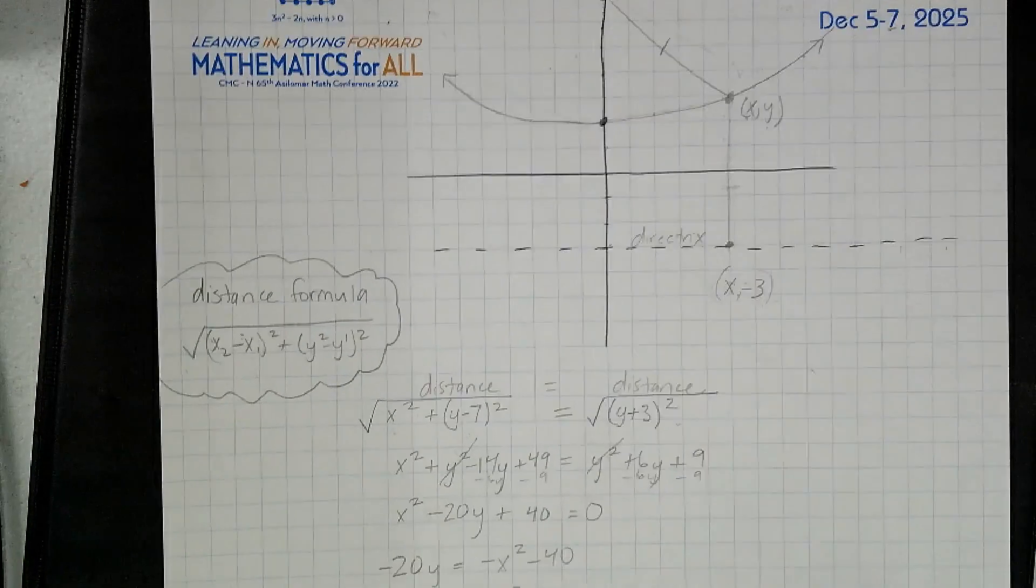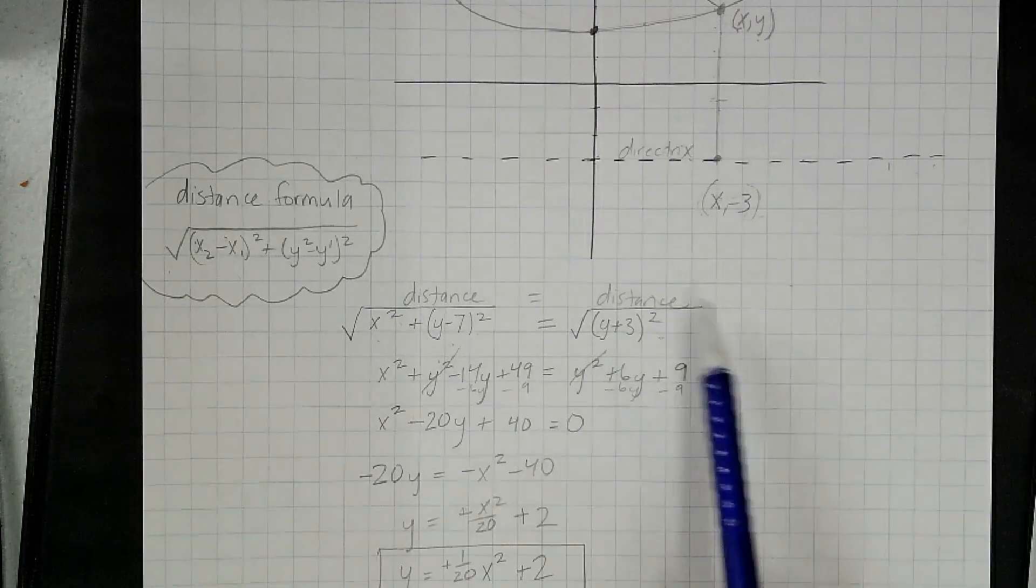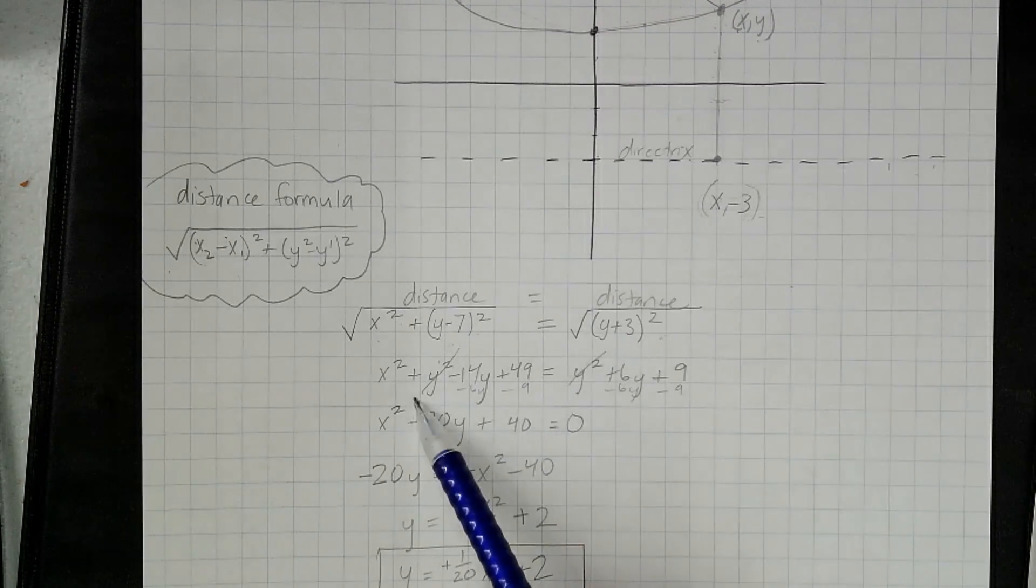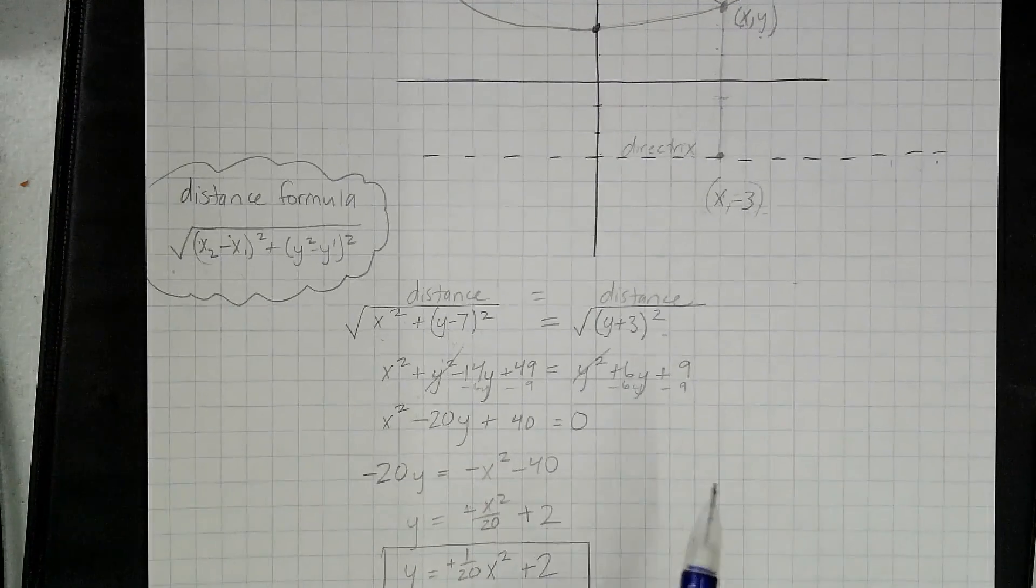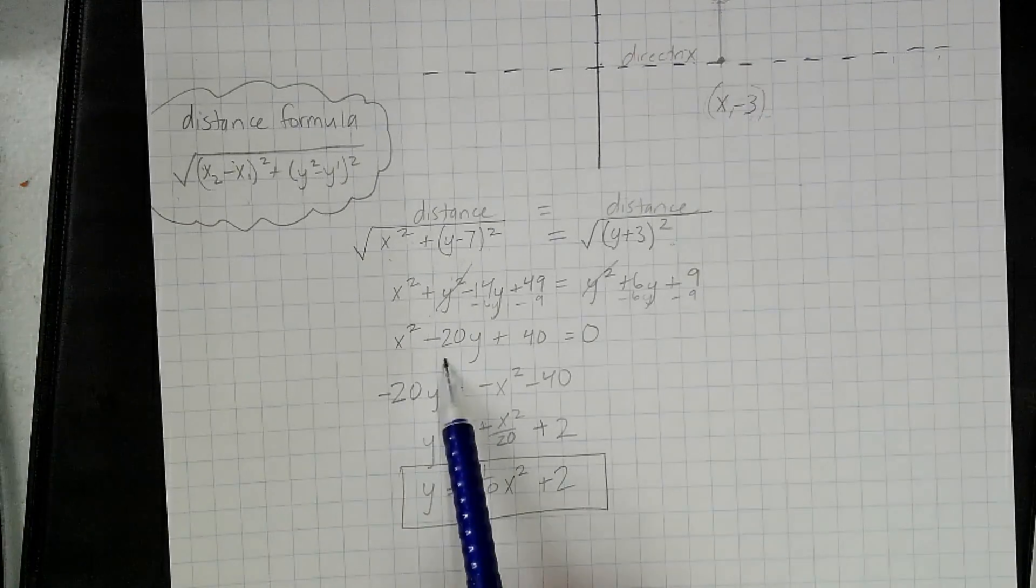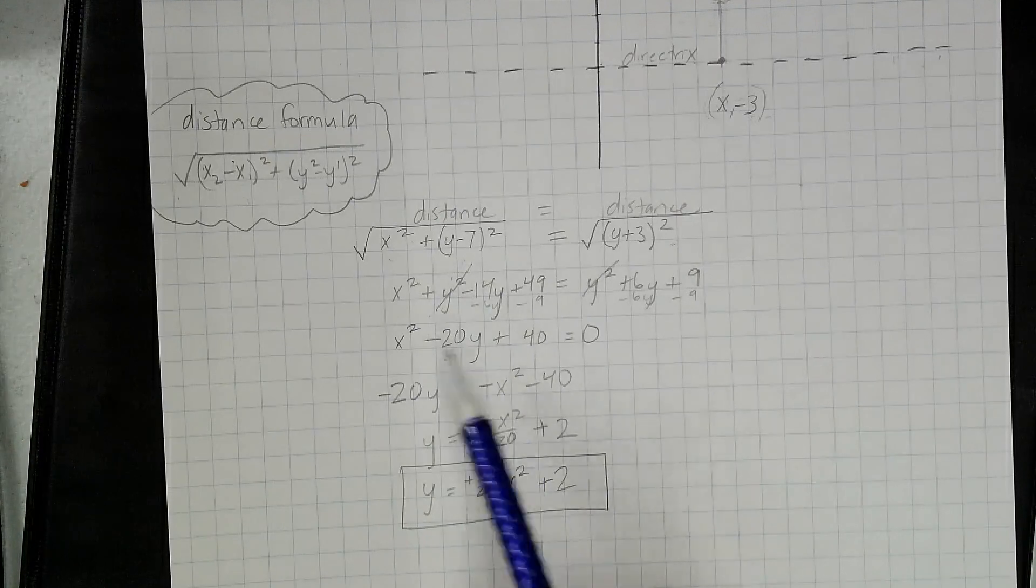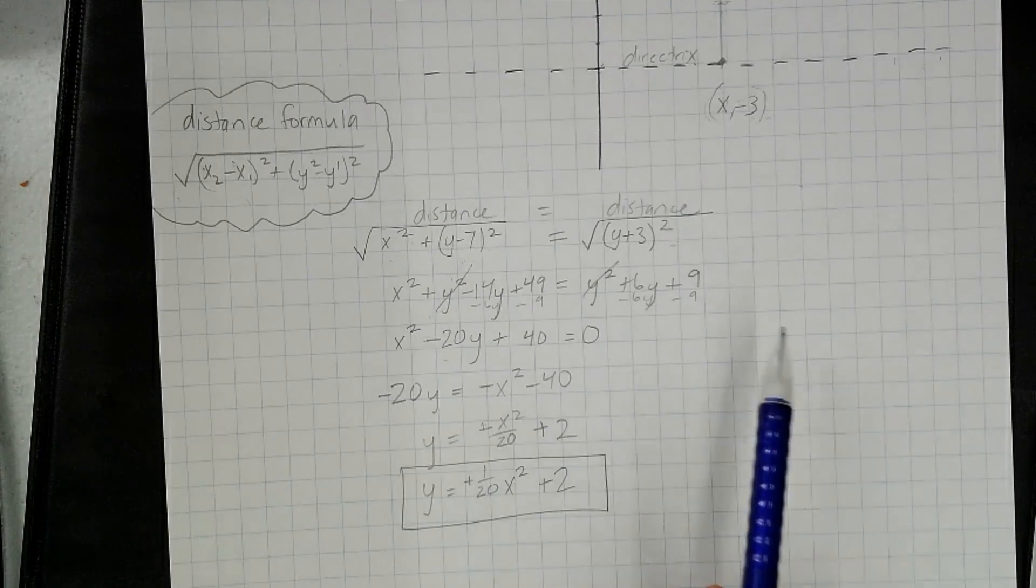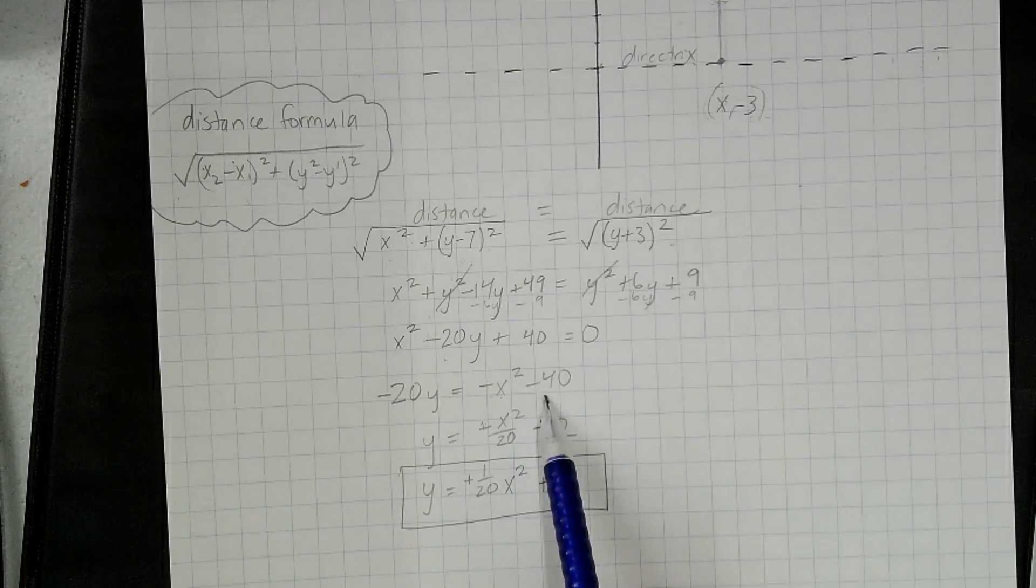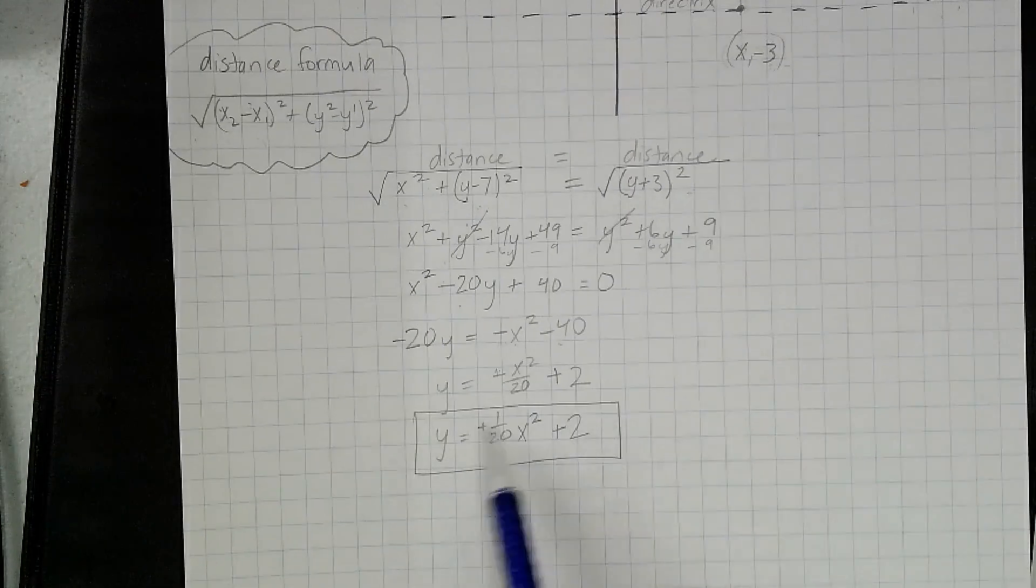So anyway, I just did a little bit of algebra. I squared both sides, that took the square roots off. Then I saw that I had y squareds on both sides, got rid of those. I ended up getting everything over on the left-hand side, but then I remembered that I need to write it in y equals form. So I went ahead and moved the x squared and the 40 over to the other side, then I divided by negative 20 and I ended up with this.